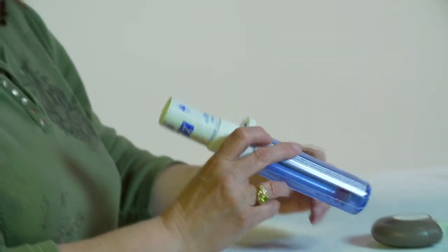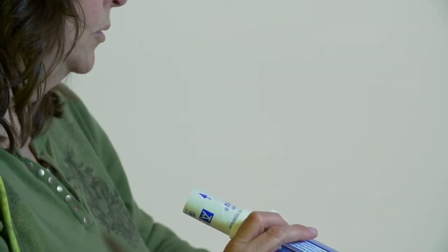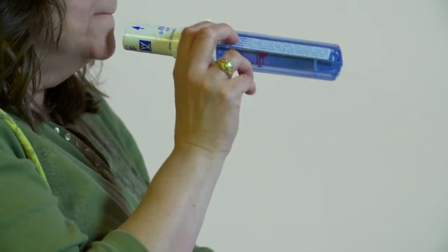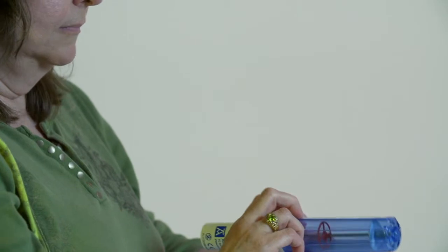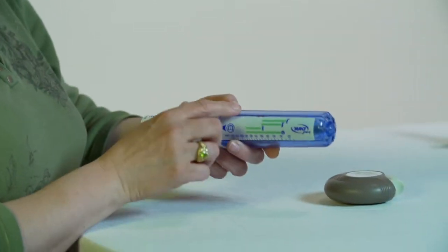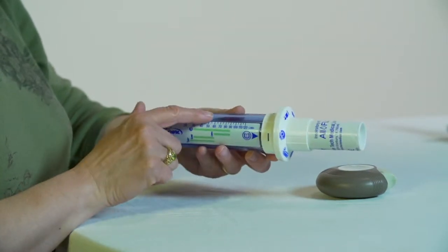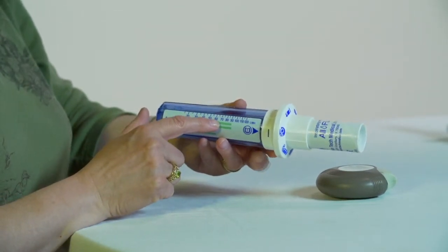Exhale deeply and create a tight seal with the lips around the mouthpiece. Inhale at the rate you think is desired for the Diskus device for about two to four seconds. Check the red indicator to see the inhalation rate actually achieved. Ideally, it should be within the optimal rate for the Diskus device, which is 30 to 90 liters per minute.